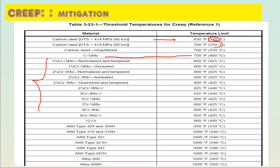For graphitized carbon steel, the limit is 370°C. Alloy steels such as Cr-½Mo are more resistant, usable up to 425–450°C.